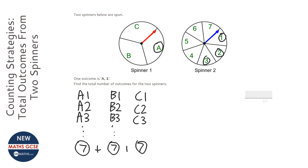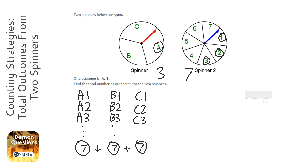So altogether, there are seven with A, seven with B, and seven with C. So if we've got three outcomes on Spinner 1 and seven outcomes on Spinner 2, all we need to do is multiply them together and it shows us how many outcomes there are in total. So the answer is 21.